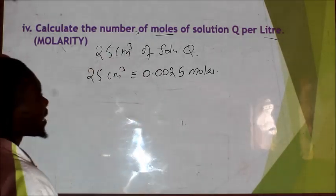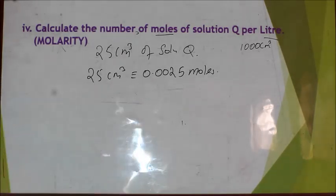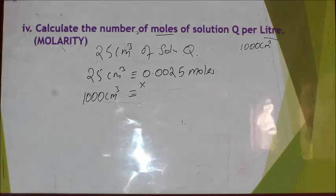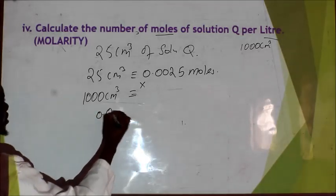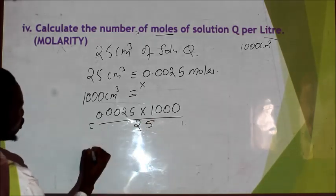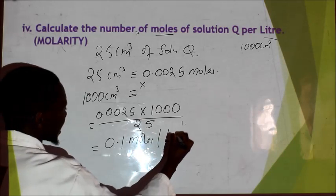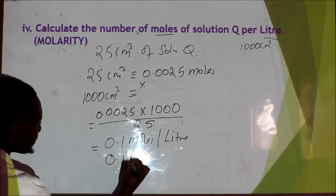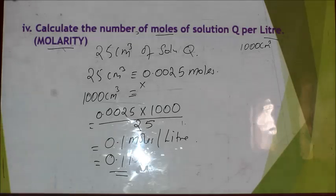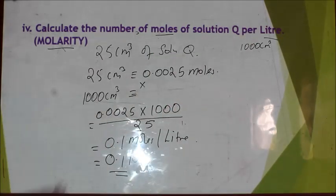So 25 cm³ is equivalent to 0.0025 moles, but we are asked about one liter. One liter is 1000 cm³, so by cross multiplication: 0.0025 × 1000 ÷ 25 = 0.1 moles per liter. This is the same as 0.1 molar. Molarity is simply the concentration of a solution in moles per liter.